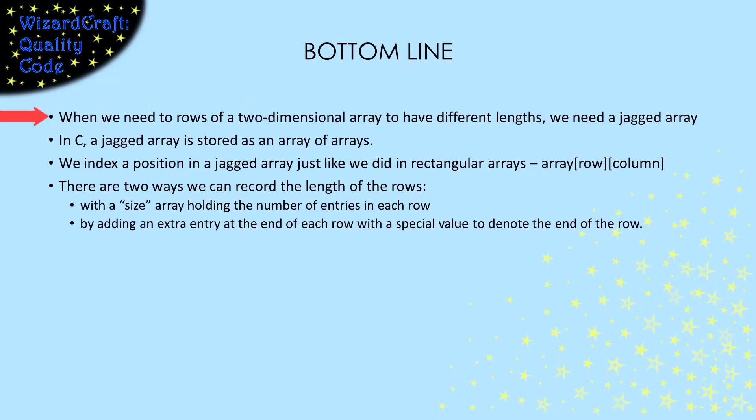Bottom line, jagged arrays are two-dimensional arrays where the rows do not all have to be the same size. In C, jagged arrays are stored as an array of row arrays. With a jagged array, we can index a particular position just like we did for rectangular arrays, by putting the row and column in square brackets after the array's name. And that's pretty magic, because rectangular and jagged arrays are stored very differently.